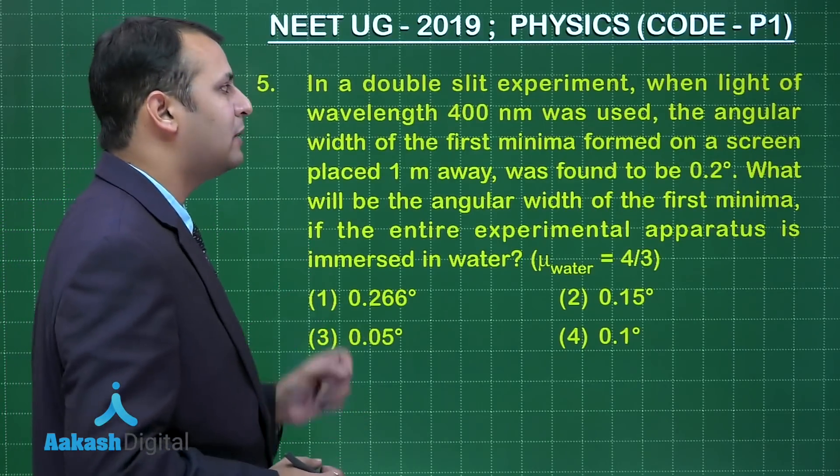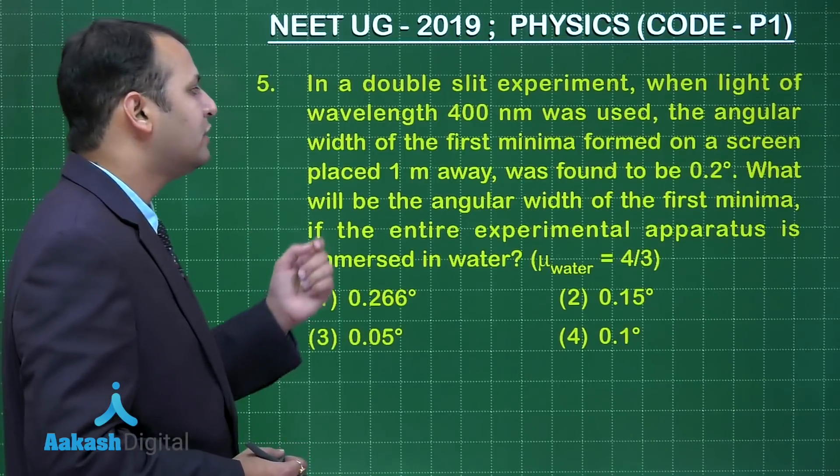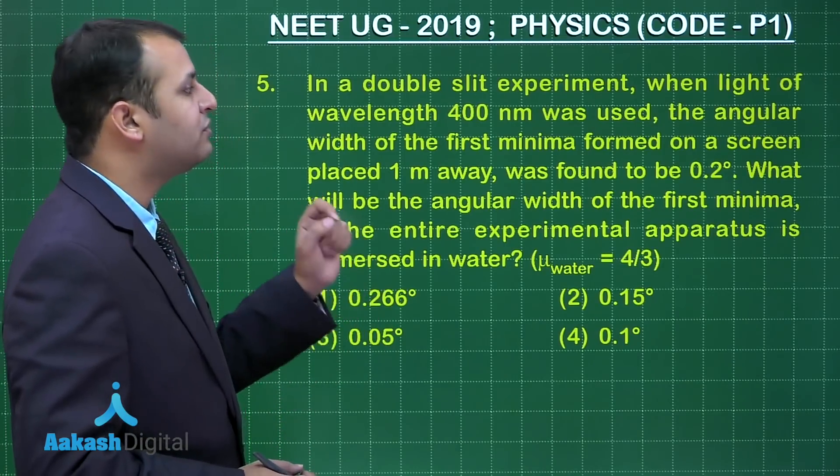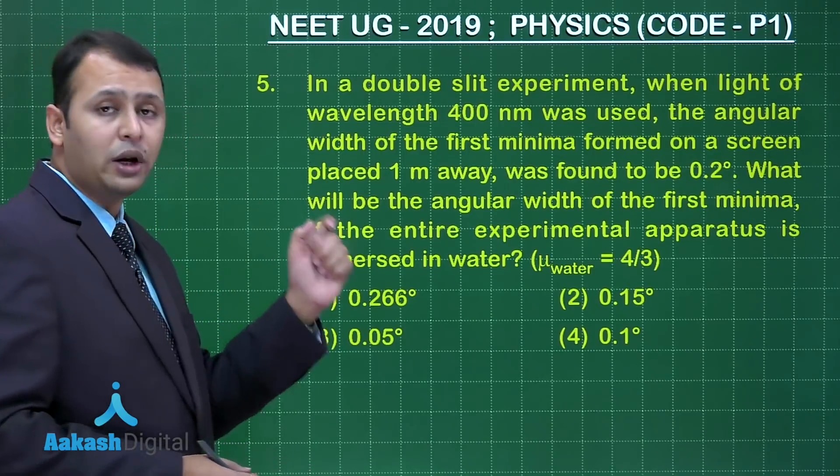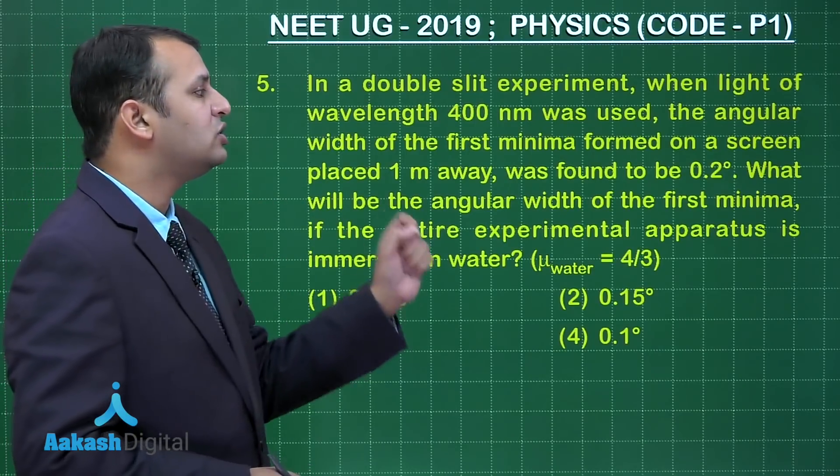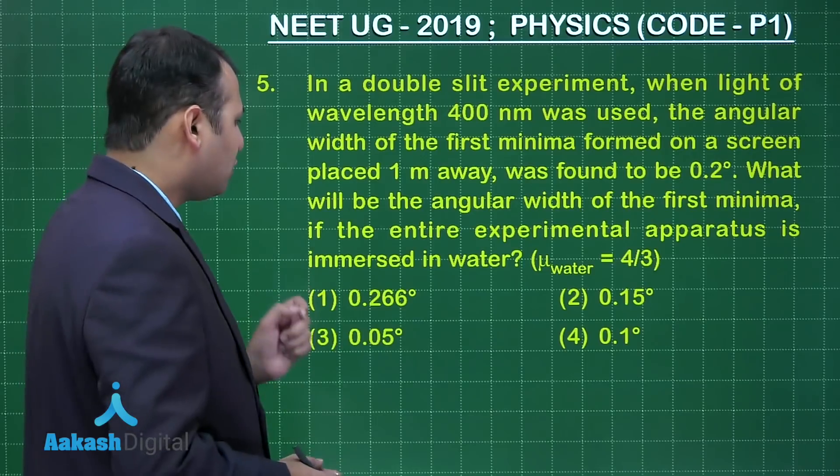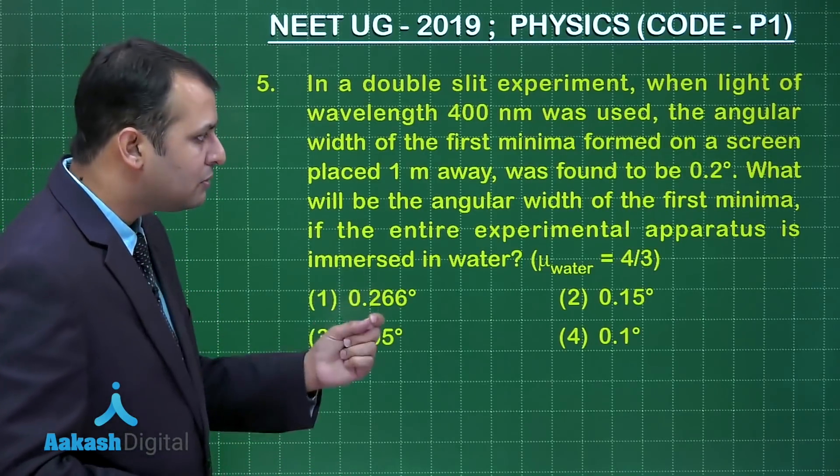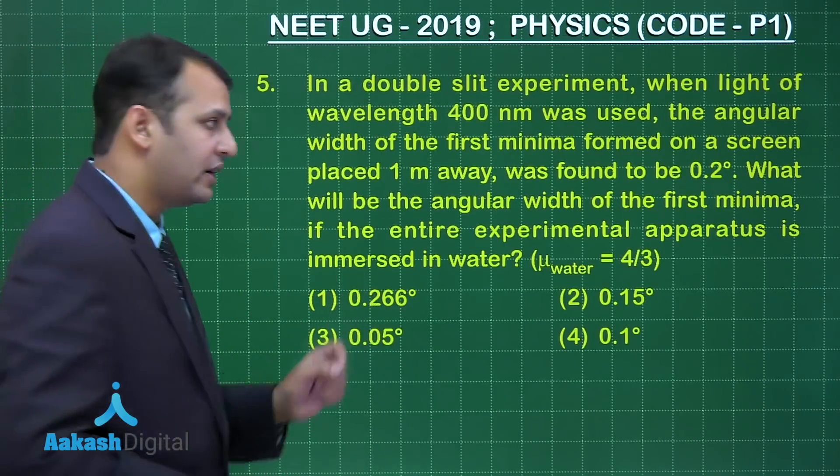As per the question, in a double slit experiment when a light of wavelength 400 nanometers was used, the angular width of first minima formed on the screen which is placed 1 meter away was found to be 0.2 degrees. What will be the angular width of the first minima if the entire experimental apparatus is immersed in water?